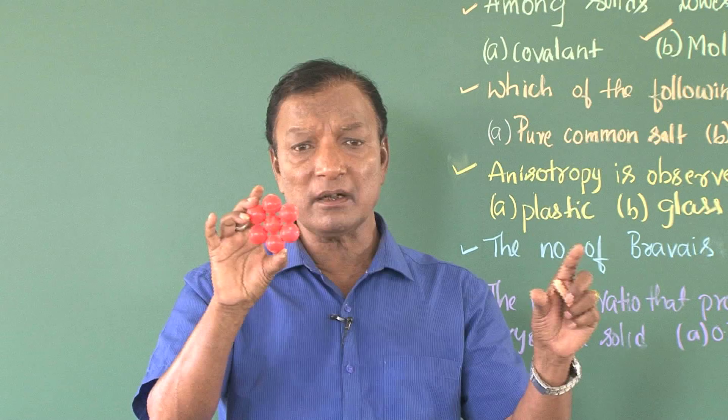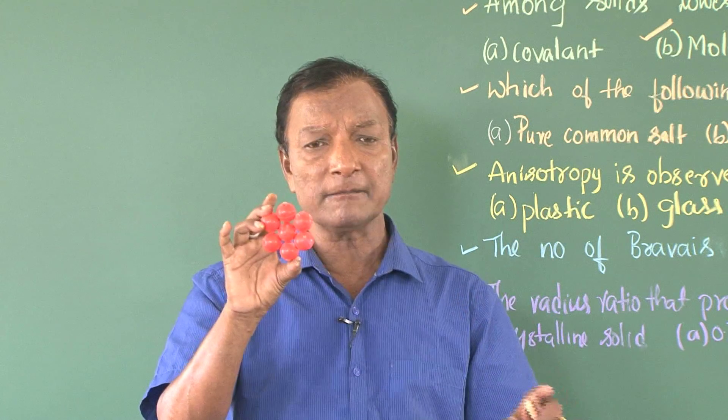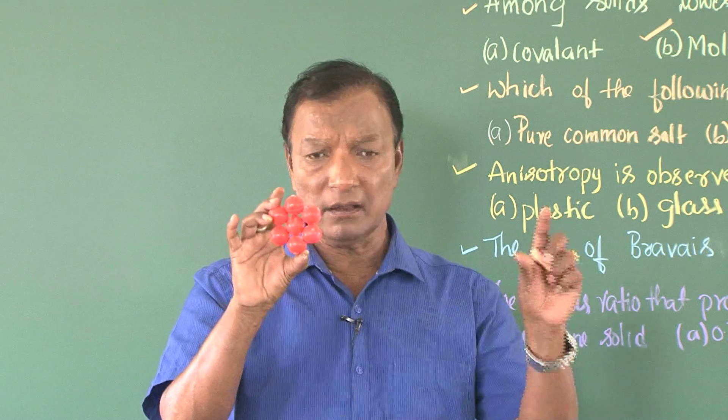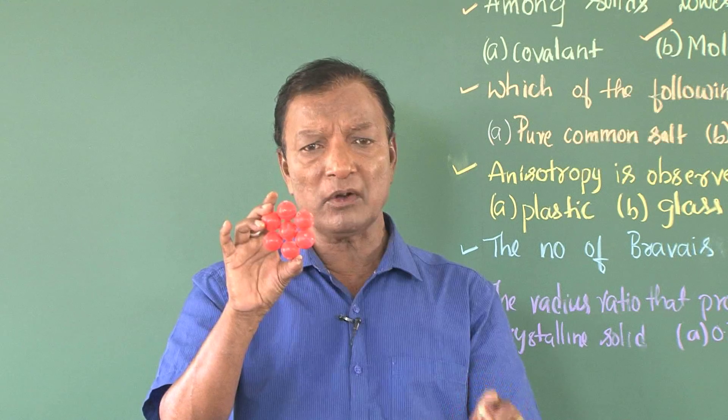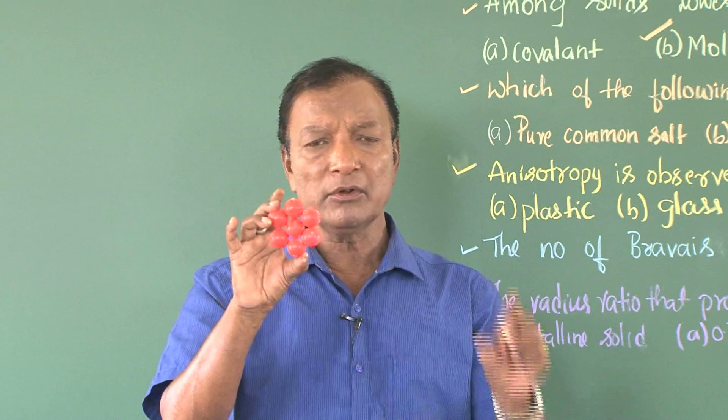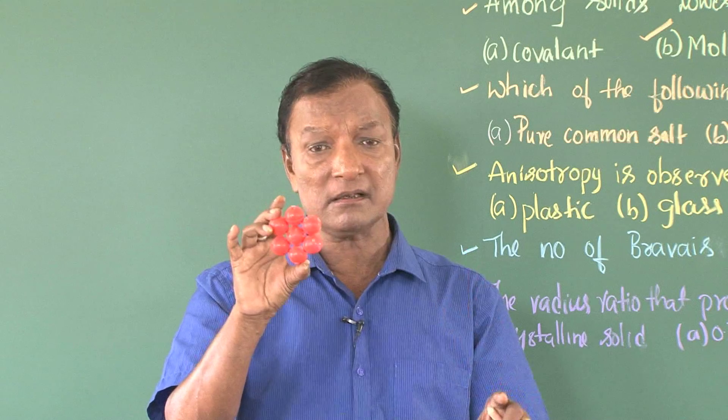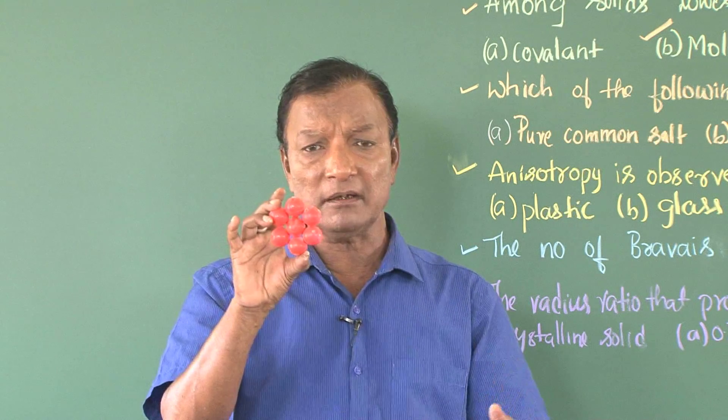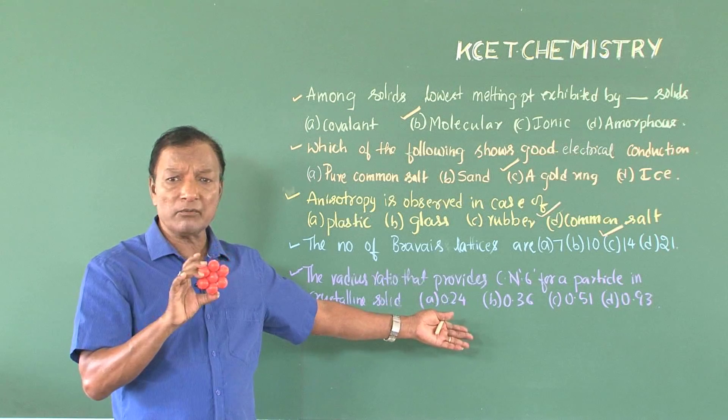And these are the four ranges with which we have to be quite familiar. Here 0.155 to 0.225, number three; 0.225 to 0.414, number four; 0.414 to 0.732, number six; and 0.732 onwards, coordination number eight. And therefore, the things become as easy as we can hope for.